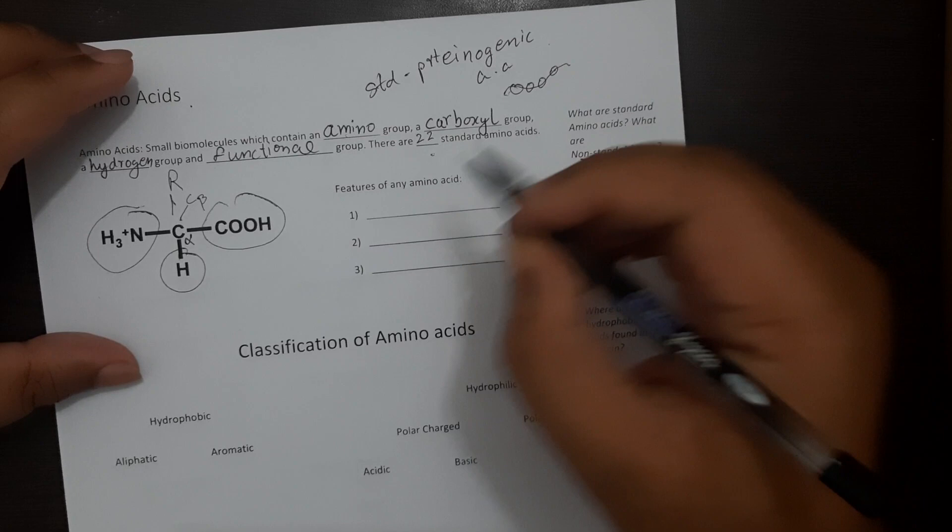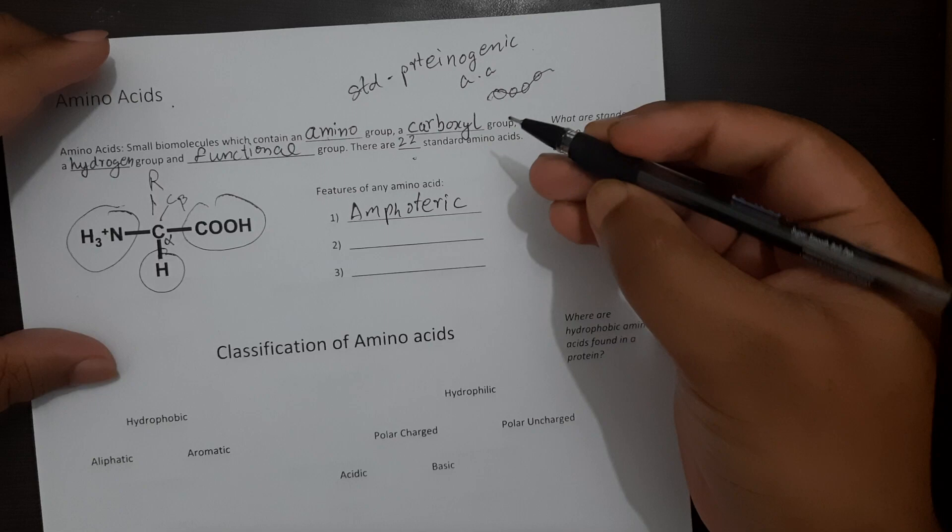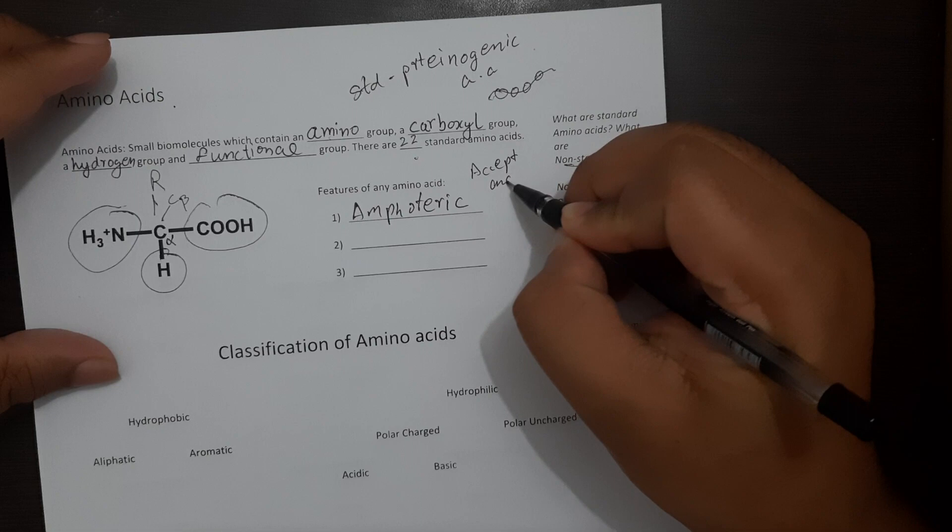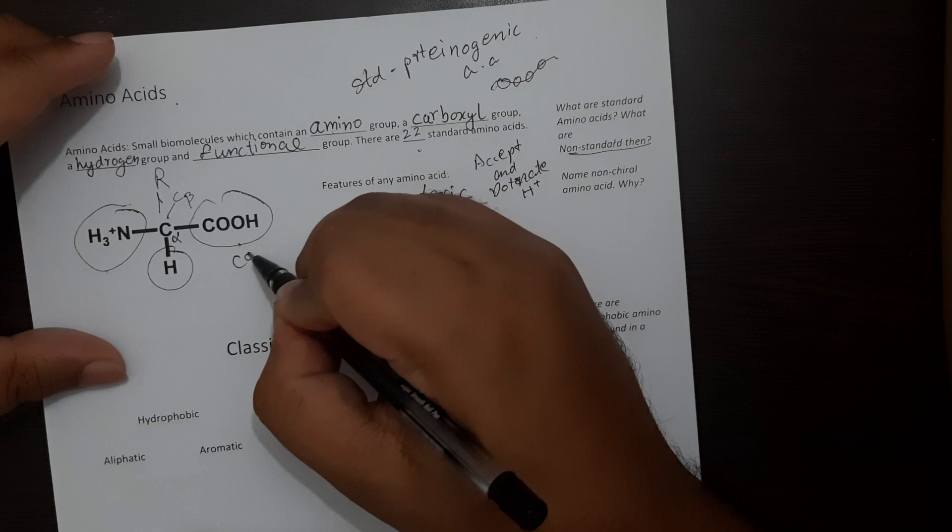So some of the features of amino acids. All amino acids are amphoteric. So what does it mean? Amphoteric means that these amino acids can both accept and donate a hydrogen atom. This is mainly achieved by the carboxyl group and your amino group.